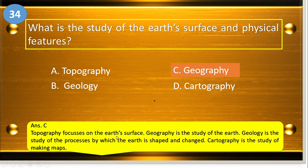Topography focuses on the Earth's surface. Geography is the study of the Earth. Geology is the study of the processes by which the Earth is shaped and changed. Cartography, on the other hand, is the study of making maps.